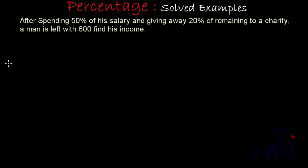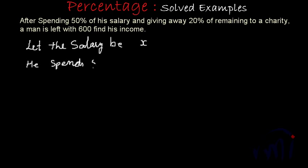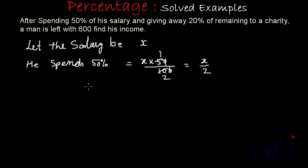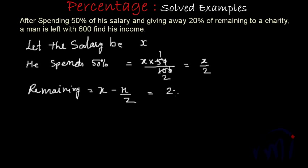Let's assume that his salary is x. He spends 50%, so his expenditure will be x multiplied by 50 by 100, which equals x by 2. Half of his salary he is spending, so the remaining will be x minus x by 2, which equals 2x minus x by 2, that is x by 2. This is the salary remaining after expenses.